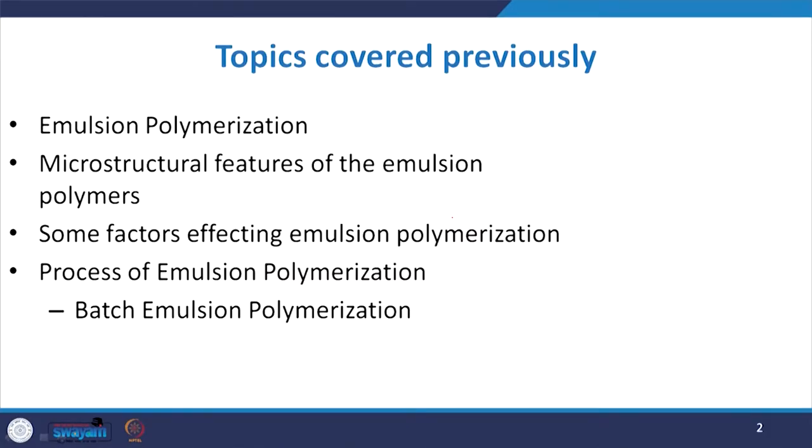Welcome to the next segment of emulsion polymerization. In this segment, we will discuss semi-continuous polymerization. Let us have a brief look at what we covered previously. We discussed emulsion polymerization, its microstructural features, various parameters, and factors affecting it. We also started the process of emulsion polymerization under the framework of batch polymerization.